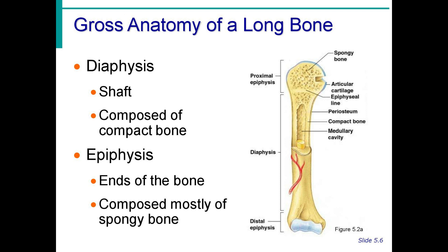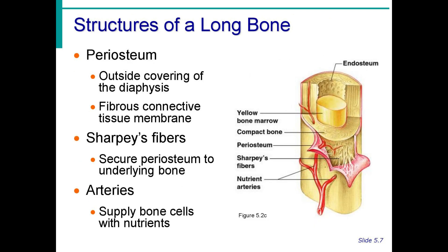In the gross anatomy of the long bone, we have the diaphysis and the epiphysis. The diaphysis is the shaft — it is long and composed of compact bone. The epiphysis is at the end of each bone and is composed mostly of spongy bone. Two important structures of the long bone are the periosteum and the endosteum. The periosteum is the outside covering and the endosteum is the inner covering near the yellow bone marrow.